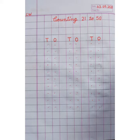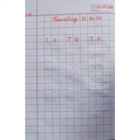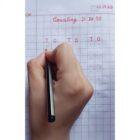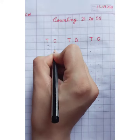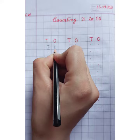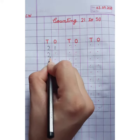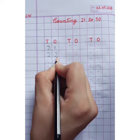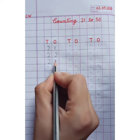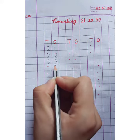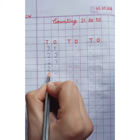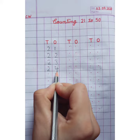Hello students, are you ready for the counting? Let's start. Today we are going to do counting 21 to 50. So here we write 2 1: 21. Now 2 2: 22. 2 3: 23. 2 4: 24.